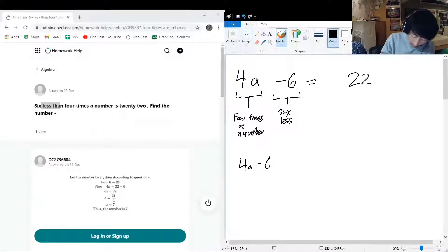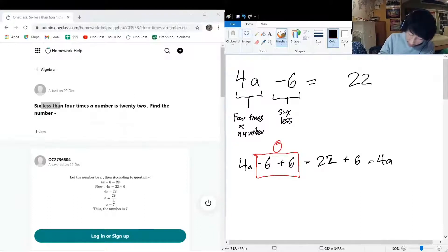So we're going to have 4a minus 6 plus 6 is equal to 22 plus 6. And you can see here that the plus 6 minus 6, this gets zeroed. Okay, so we will just have 4a is equal to 22 plus 6, which is equal to 28.